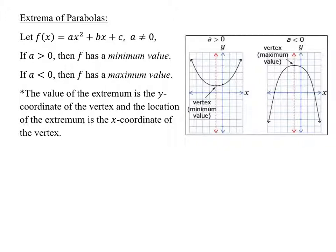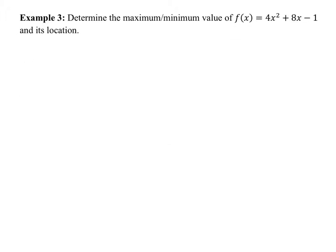Let's take a look at an example: determine the minimum or maximum value of this graph and determine its location. What are we really trying to find? A min or a max. What's another word for that which we've been using all of Section 7.5? The vertex. If you're finding a min or a max, you're finding a vertex. To find a vertex in standard form, find the axis of symmetry first and then just plug it into the function.